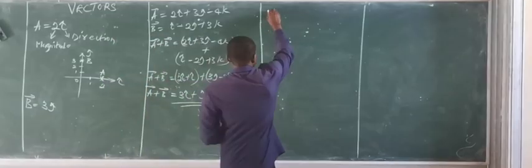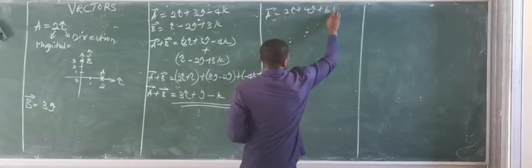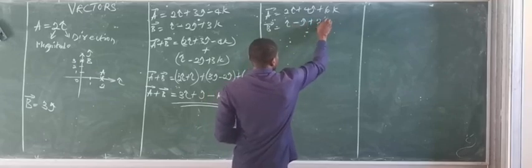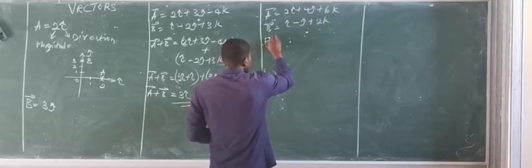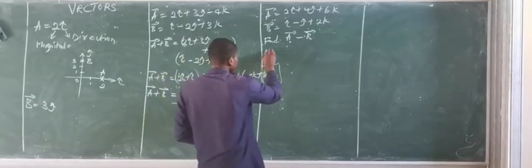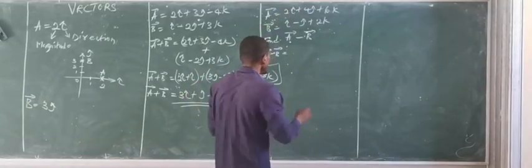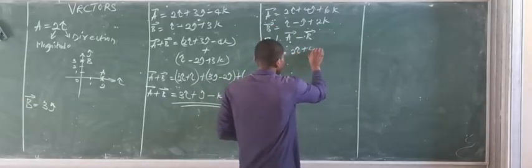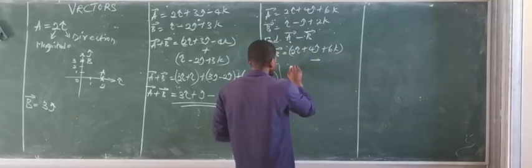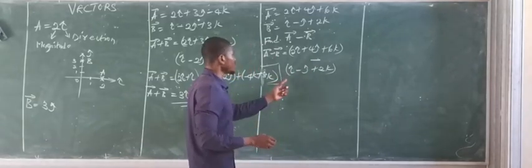Let's say vector A equals 2I plus 4J plus 6K, and vector B equals I minus J plus 2K, and we need to find A minus B. So vector A minus vector B uses the component values of vector A, which is 2I plus 4J plus 6K, subtracting I minus J plus 2K from it.